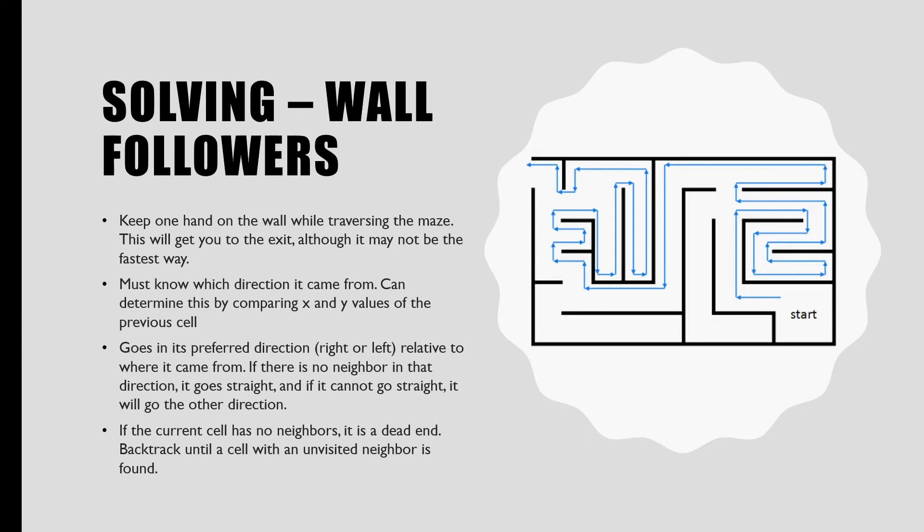On the right, you can see a visualization of how this works. In order to implement this using code, we have to know what direction we came from in order to know which way to go. We can determine this by comparing the x and y values of the current cell to the previous cell.